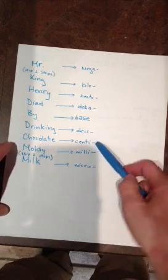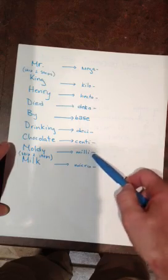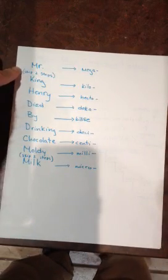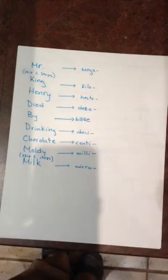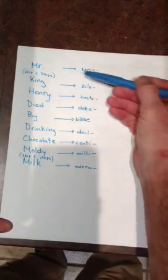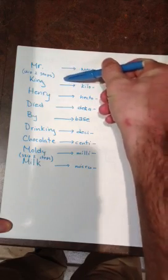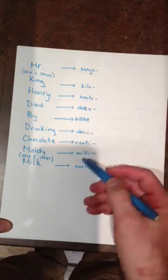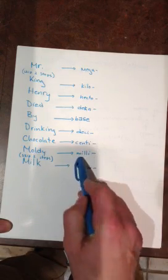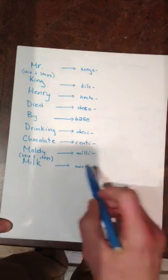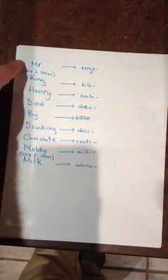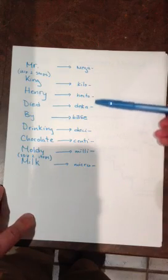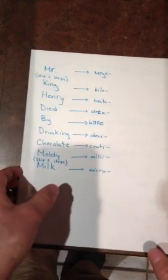Deci is one-tenth, centi is a hundredth, milli is a thousandth, and micro is a millionth. It says skip two steps here, and skip two steps here, because there aren't any separate prefixes for hundred-thousands and ten-thousandths. And likewise, down here, there isn't an extra prefix for either of these two steps, which would represent ten-thousandths and hundred-thousandths. So, first step is to remember these. That will help you at least know the first letter of all the prefixes from mega to micro.